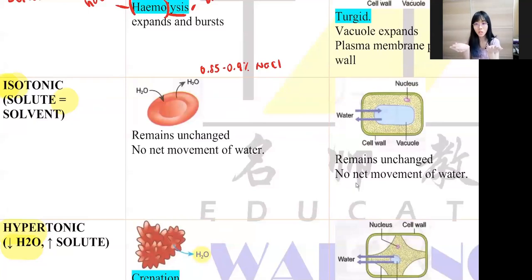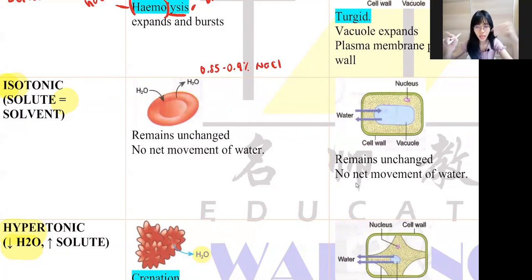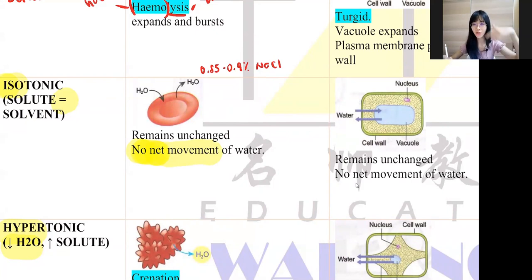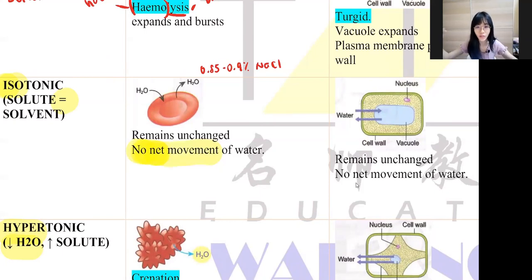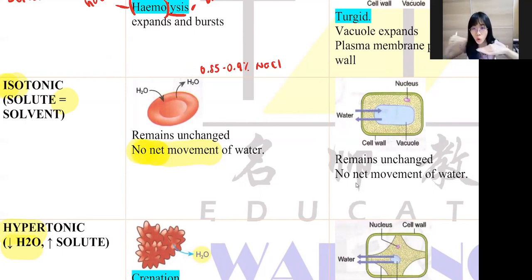So I put red blood cell into isotonic solution. Because they are the same, water will diffuse in and also diffuse out at the same rate. We call this no net movement of water. No net movement is not equal to no movement — it means today I give you 10 ringgit, tomorrow you return me 10 ringgit. Because if 10 water molecules diffuse in, 10 water molecules diffuse out. So the red blood cell remains unchanged in its biconcave disc shape.